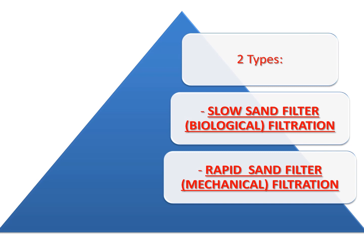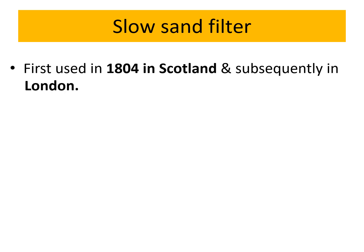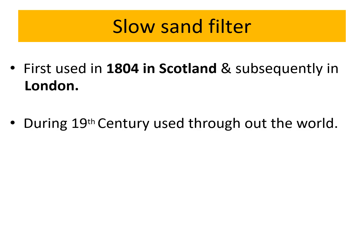Today we will discuss the slow sand filter. It was first used in the year 1804 in Scotland and subsequently in London. During the 19th century, it was used across the world in most parts of countries.